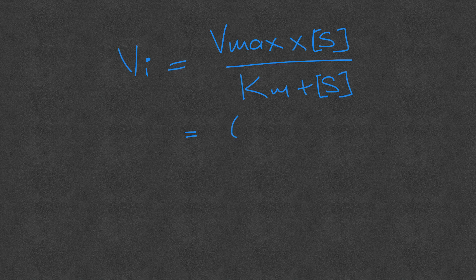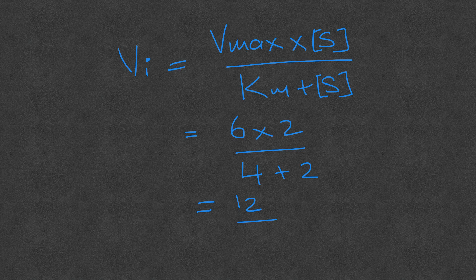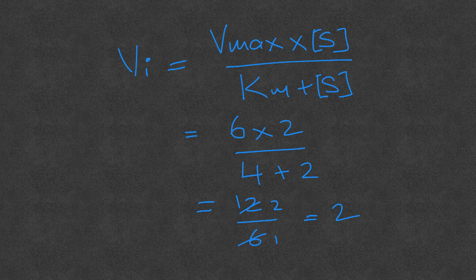Let's take some numbers: Vmax = 6, substrate concentration = 2, Km = 4. So initial velocity Vi = Vmax × [S] / (Km + [S]) = 6 × 2 / (4 + 2) = 12 / 6 = 2. So Vi equals 2.